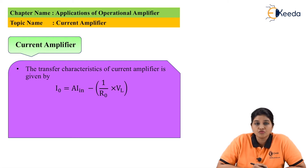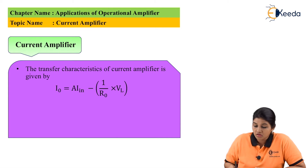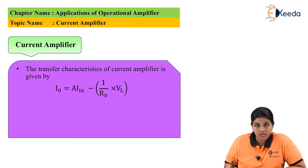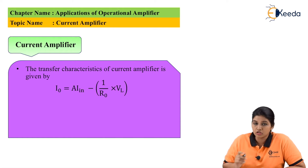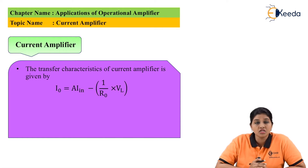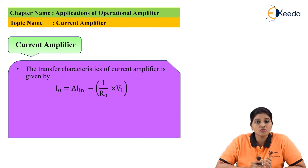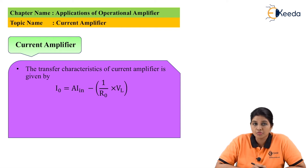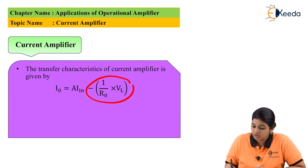From the equation we will come to know that the output current IO does not only depend upon the value of IN, but it also depends upon the value of VL, which is an undesirable characteristic. So in order to make this characteristic desirable, it is very important to make the second term equal to zero.